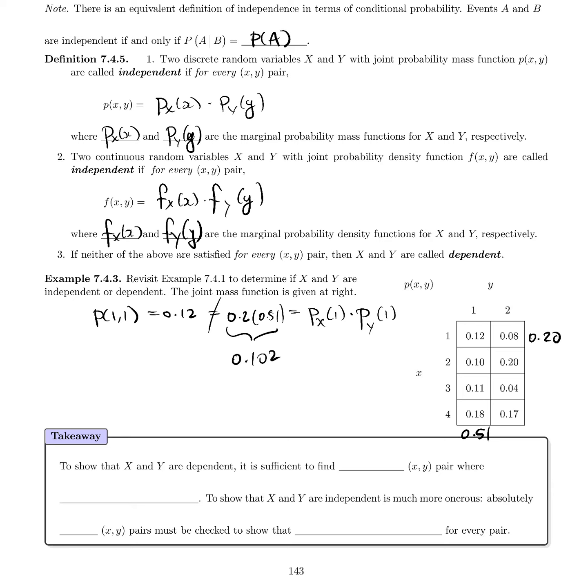And so we have one pair already that's failed. We don't need to check the rest. We know that that relationship is not satisfied for every (x,y) pair, because here's one that's failed. So we can immediately conclude that X and Y are not independent, they are dependent. So X and Y are dependent.